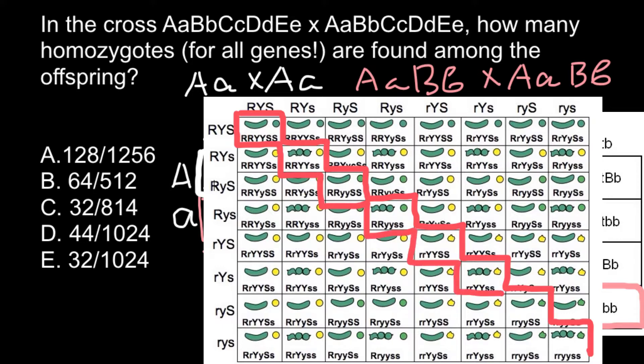Now as you see, we can easily predict the number of homozygotes in a pentahybrid cross. Let's now logically think how big this Punnett square is going to be. If a monohybrid cross would produce a two by two Punnett square, dihybrid cross would produce four by four, trihybrid cross would produce eight by eight, tetrahybrid cross would produce 16 by 16.